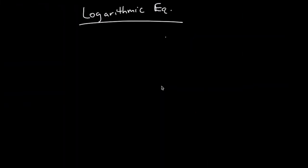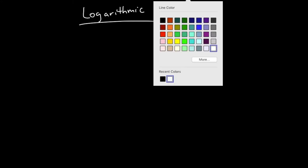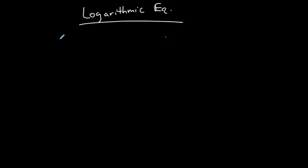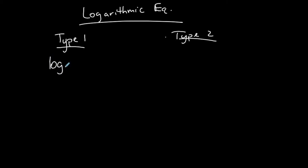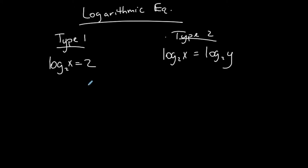We're going to talk about logarithmic equations and there are two different types. I call them Type 1 and Type 2 — not technical terms, just to separate them. Type 1 has a logarithmic function on the left and a constant number on the right. Type 2 has a single log on the left and a single log on the right, and the bases are the same. I approach them differently depending on the type.